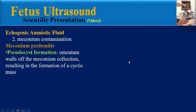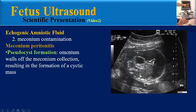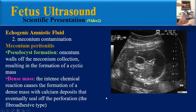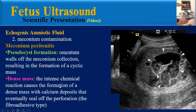Another finding is pseudocyst formation, which involves omental walls of the meconium collection resulting in the formation of a cystic mass. Another finding is a dense mass — the intense chemical reaction causes the formation of a dense mass with calcium deposits that eventually seal off the perforation.